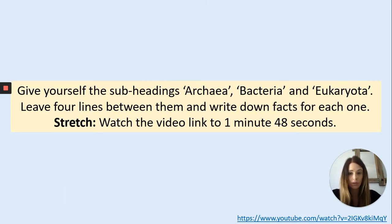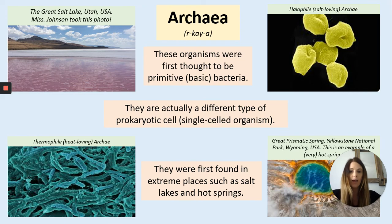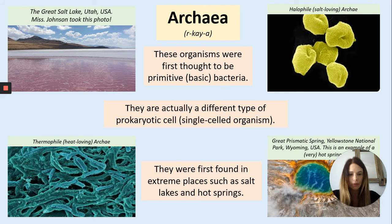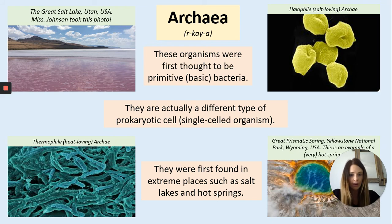Give yourself subheadings for archaea, bacteria, and eukaryota, leaving three to four lines between them to jot down a fact about each one. Archaea is thought to be the very first, most primitive type of bacteria that lived on the planet. They are different from the bacteria we have today — they would be our prokaryotic cells and are very basic, existing on Earth probably before most life forms. They were first found in very extreme places: really salty, really hot, or really cold environments where today's life normally would not exist. We call them extremophiles because they can exist in extreme conditions.